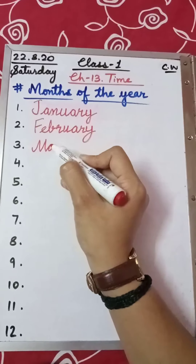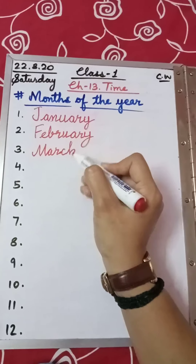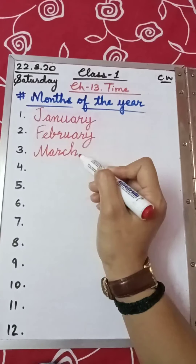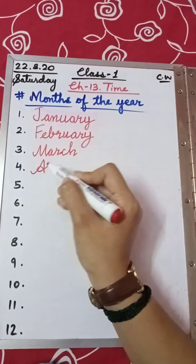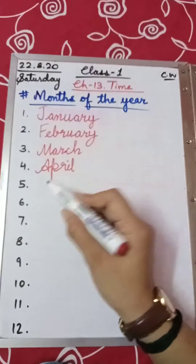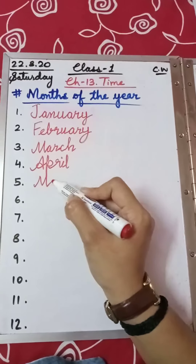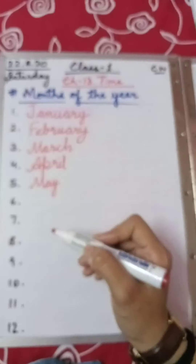March — M-A-R-C-H, March. Next is April — A-P-R-I-L, April. After April comes May — M-A-Y. Then June — J-U-N-E. And July — J-U-L-Y.